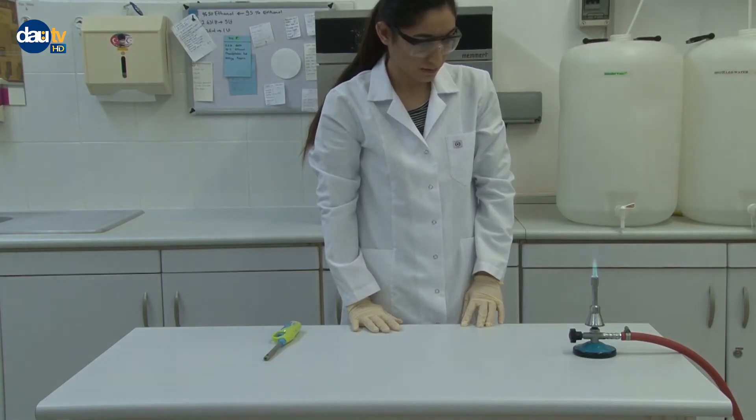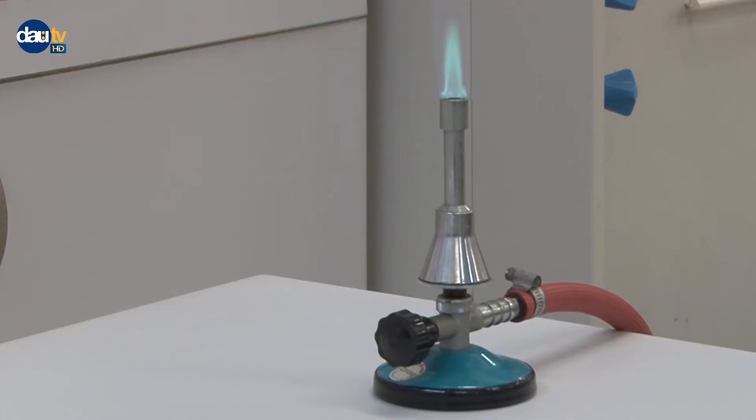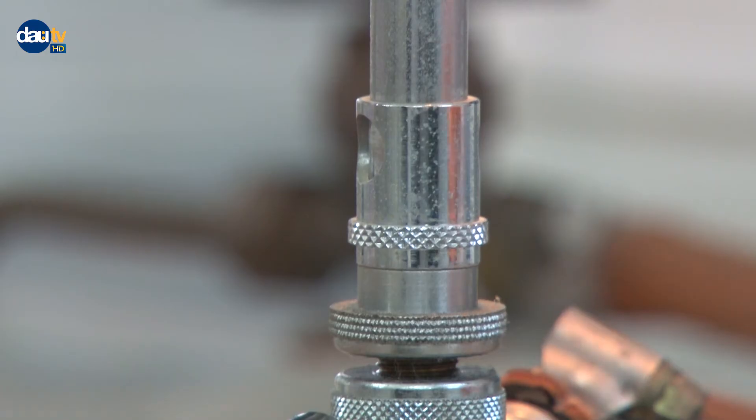The color of the flame will become blue with a shape of a cone as you increase the amount of air by opening the air valve. This blue colored cone shaped flame is the proper flame for heating.